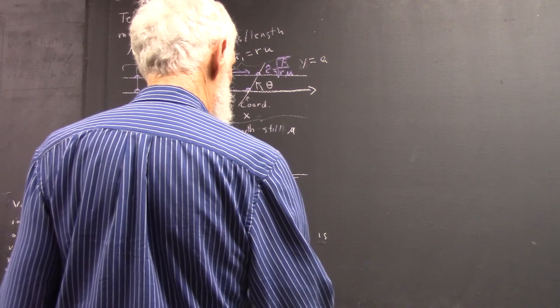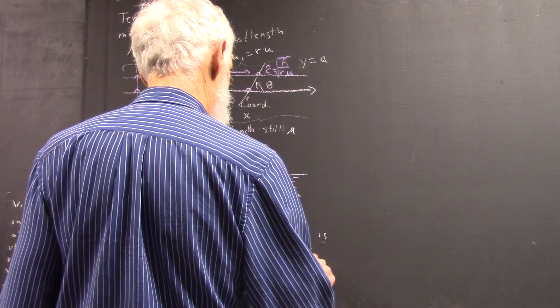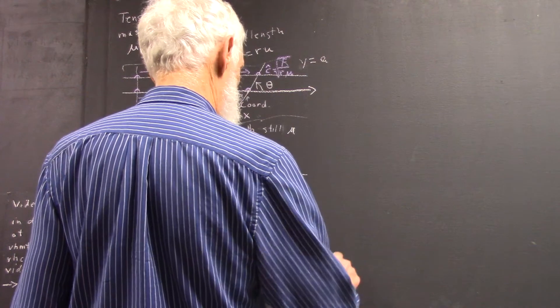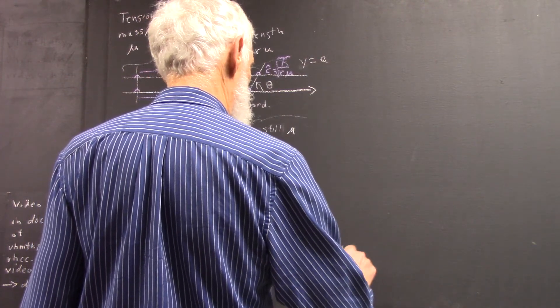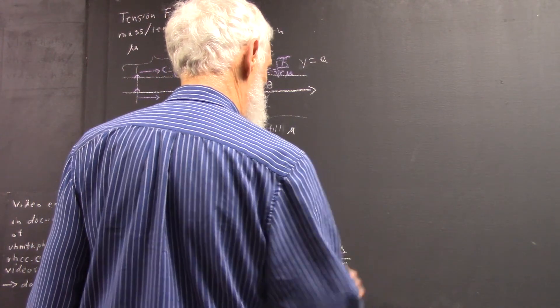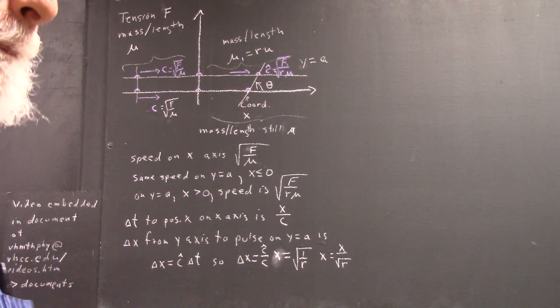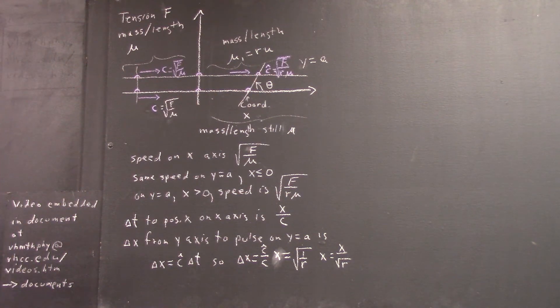Well, you can work out the arithmetic. It's the square root of one over r times x, or x over square root of r. Okay, so now...